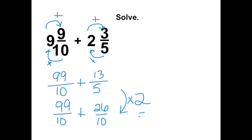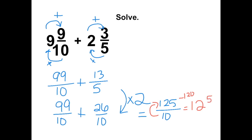99 plus 26 equals 125 over 10. Because this is an improper fraction, we need to convert it to a mixed number. 10 goes into 125 twelve times, which equals 120. We subtract that from the numerator to get our new numerator, which is 5. The denominator always stays the same, so we have 12 and 5 tenths.